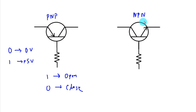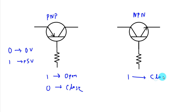For an NPN transistor it is opposite to PNP. If we provide 1 to the base, it will work as a closed circuit. And if we provide 0, it will work as an open circuit.